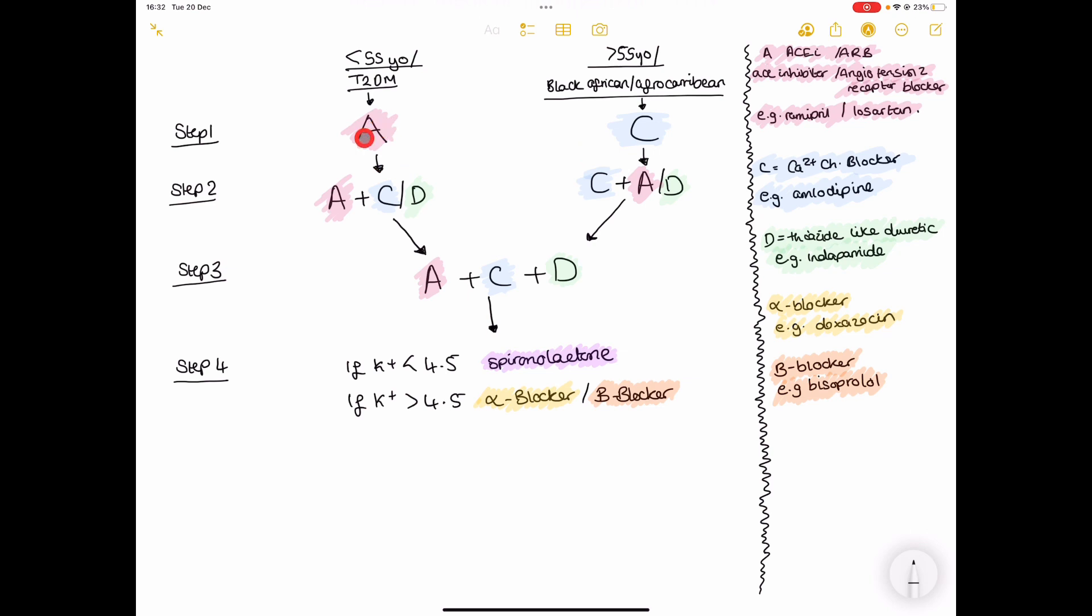So if they've started off with an A drug, then next you add on either a calcium channel blocker or a thiazide-like diuretic. If they've started on a calcium channel blocker, then you add in either an A drug or a thiazide-like diuretic.